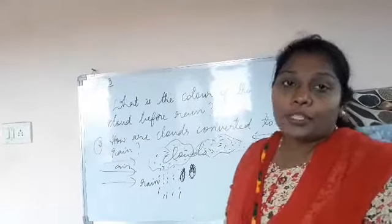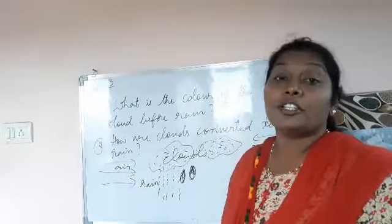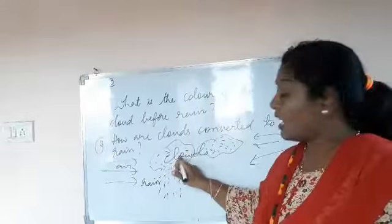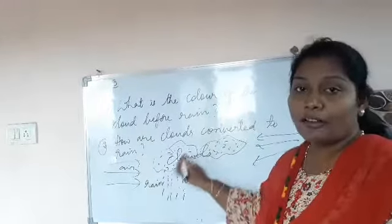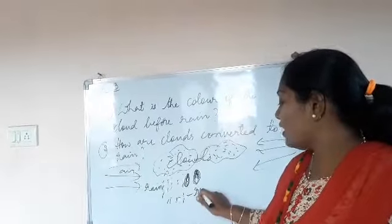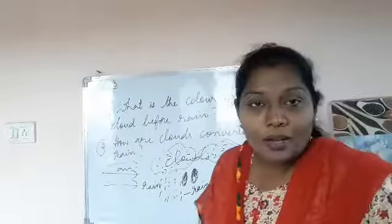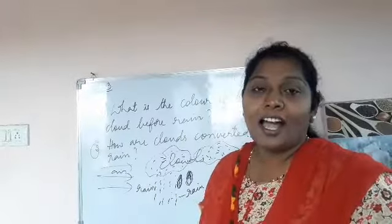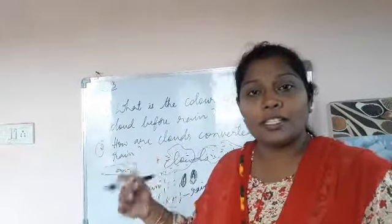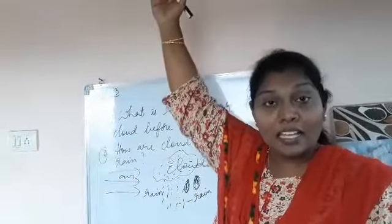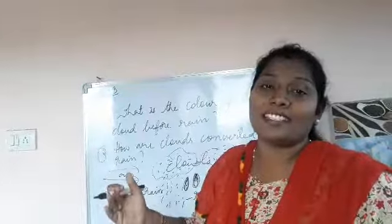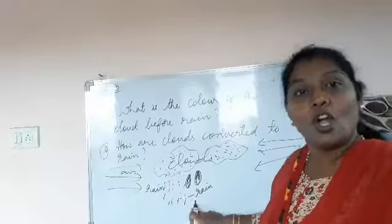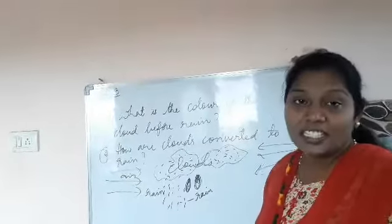Due to the process of condensation, the water vapor is converted back into water droplets and falls down as rain. This is how rain is formed — water is evaporated from water bodies, moves up into the sky, and then the procedure of condensation takes place. Due to condensation, the water vapor is converted back into water and falls onto the earth as rain.